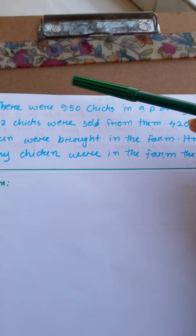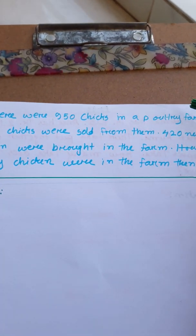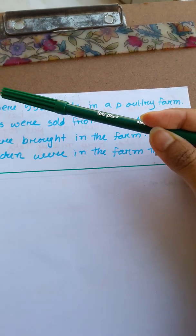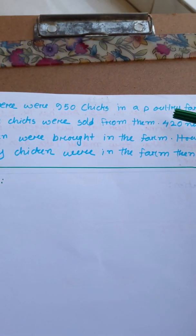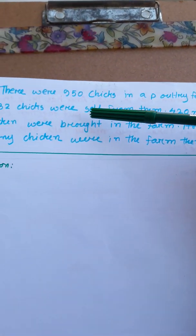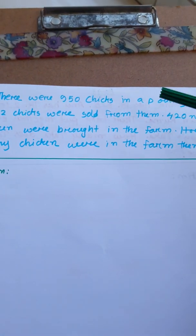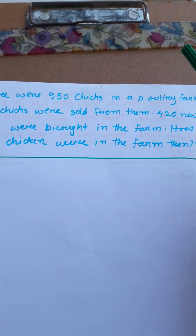I am on the next math. There were 950 chicks in a poultry farm. 532 chicks were sold from them. 420 new chicks were brought in the farm. How many chickens were in the farm there?